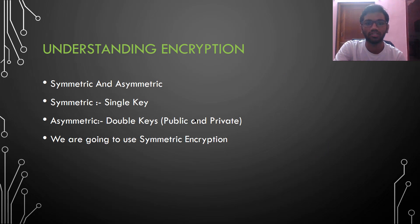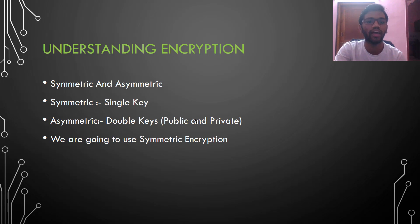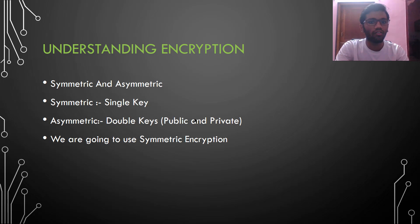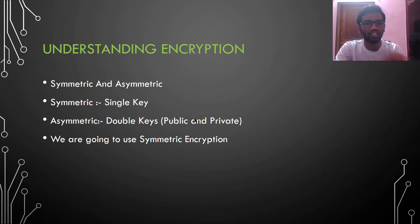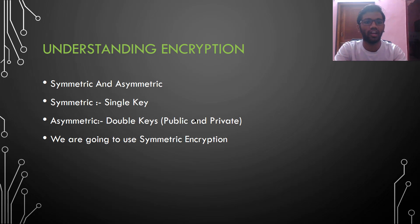Let's understand what encryption is, because encryption is all we are going to do in our ransomware. Encryption is a method in which we convert normal readable text to cipher text through an algorithm and a key. For example, you have a text file with the content 'Hello, my name is Aman' — very readable. But when it goes through an encryption algorithm, it is totally converted to another form which is not readable at all — something like 'XYZ123_#124'. And for decrypting that cipher text, you also need the key with which it was encrypted.